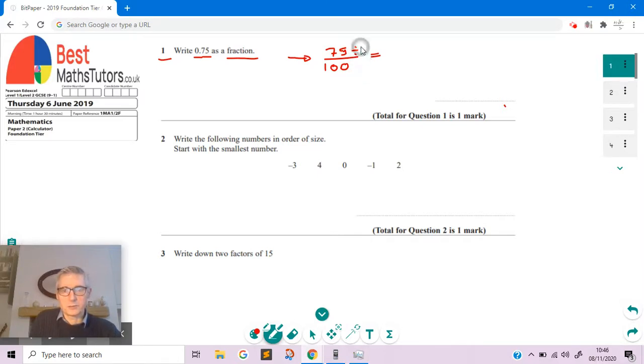If we divide the top by 25, 25 goes into 75 three times, and we can also divide the bottom by 25. If we divide 100 by 25, 25 goes into 104 times. So 0.75 as a fraction is three quarters.